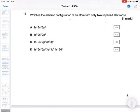Okay, question 15: Which is the electron configuration of an atom with only two unpaired electrons? So we need to think about how the electrons pair up. 1s2, so that's going to be that. 2s2 is going to be that. And then 2p3, now remember these are going to go in one orbital each until they have to. So that's three, so it is not that one.